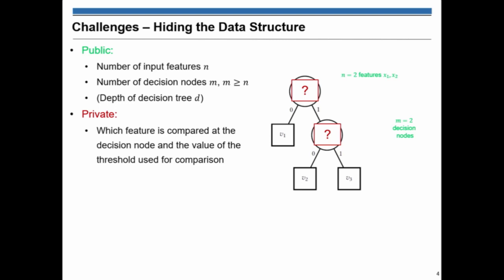But we want to do it in a private manner. We don't want the hospital, for example, to know which feature is compared at which, or the user doesn't want to know which feature is compared to the threshold and also the user shouldn't know the comparison result. And at the end, we also want to keep the tree topology as a secret.